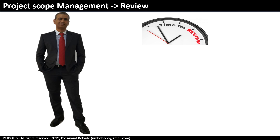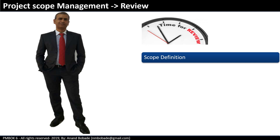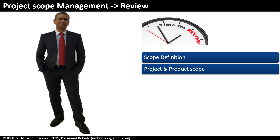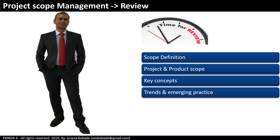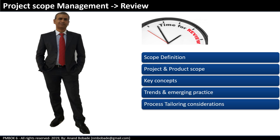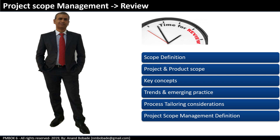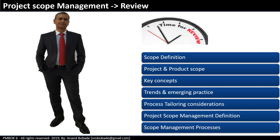Great job. We have completed the overview of the project scope management knowledge area. We started with the scope definition, differentiated between project and product scope, and understood that product scope is a part of project scope. We covered key concepts, trends and emerging practices, process tailoring considerations, and considerations for agile environments. We also learned the scope management definition and had a brief overview of all six scope management processes. Keep learning — see you in the next session, which is plan scope management, the first process in the scope management knowledge area.